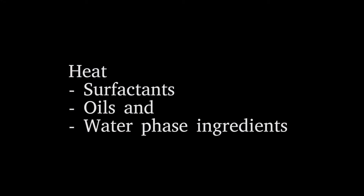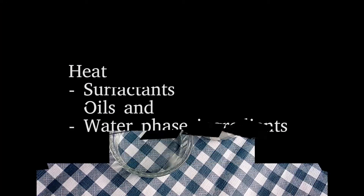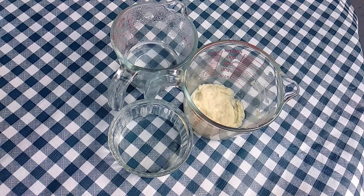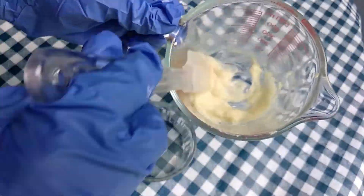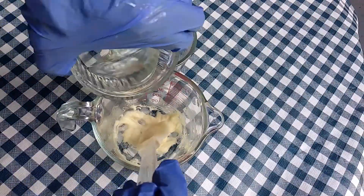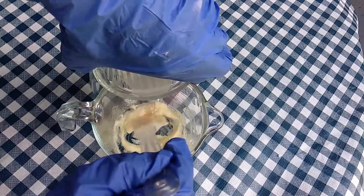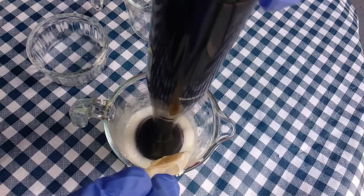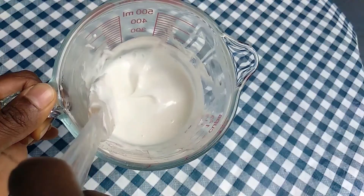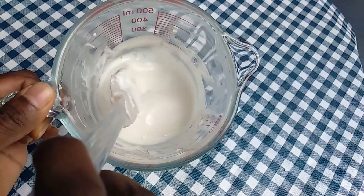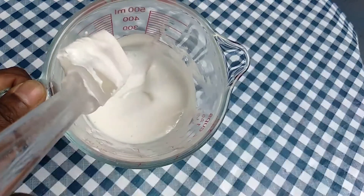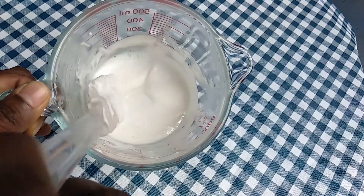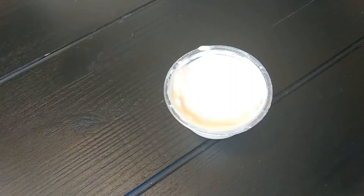I heat all three phases separately and then mix them, using my blender. The last phase is the cool down phase — when it is cool I include preservative and scents.